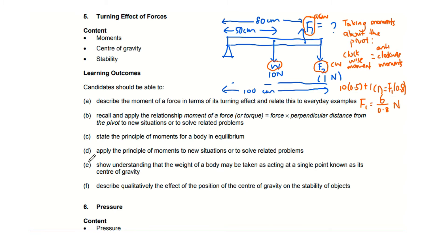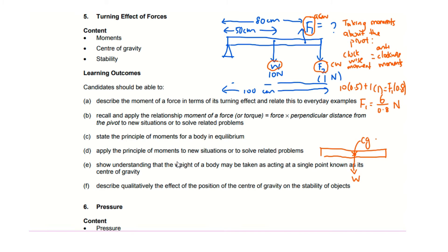Next, part E: show understanding that the weight of a body may be taken as acting at a single point. Basically, the centre of gravity is the point where the entire weight of an object seems to be acting from. So if I have a metre rule, all the weight seems to act at the centre — that point is known as the centre of gravity.